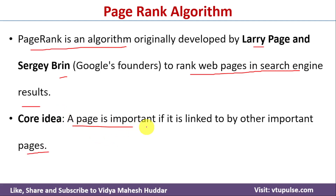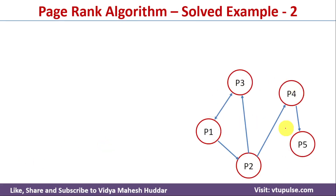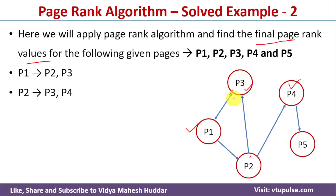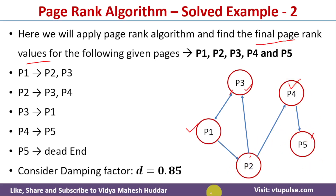A page is important if it is linked to by other important pages. This is the given web graph. We need to apply the PageRank algorithm and find the final page rank values. Web page P1 links to P3 and P2; P2 links to P3 and P4; P3 links to P1; P4 links to P5; and P5 is a dead end. We will consider a damping factor d = 0.85.